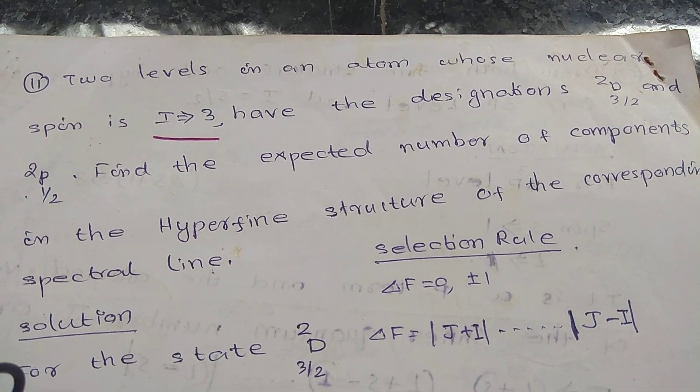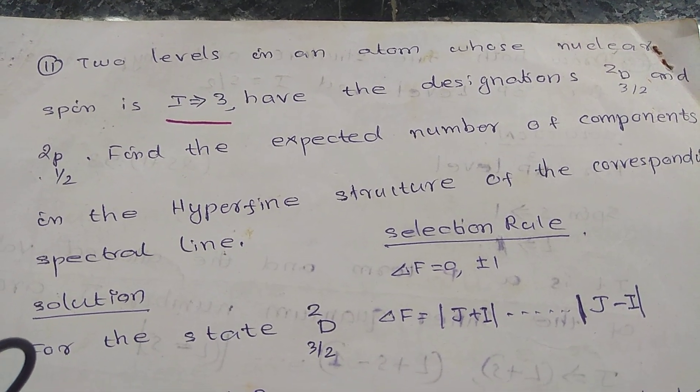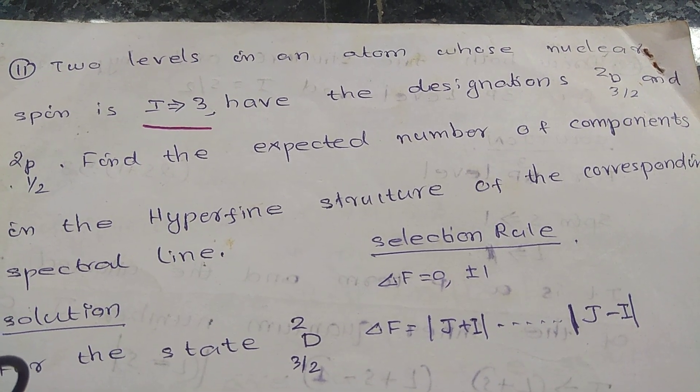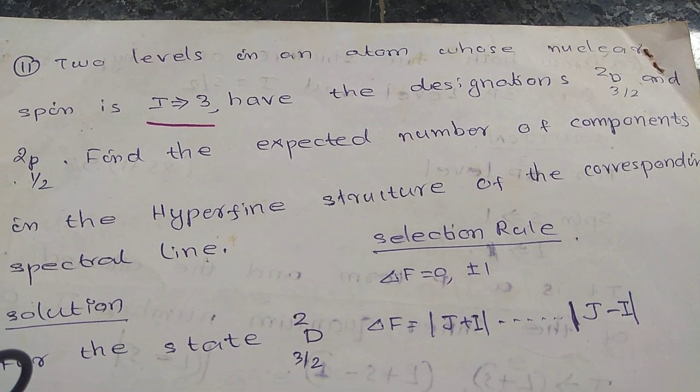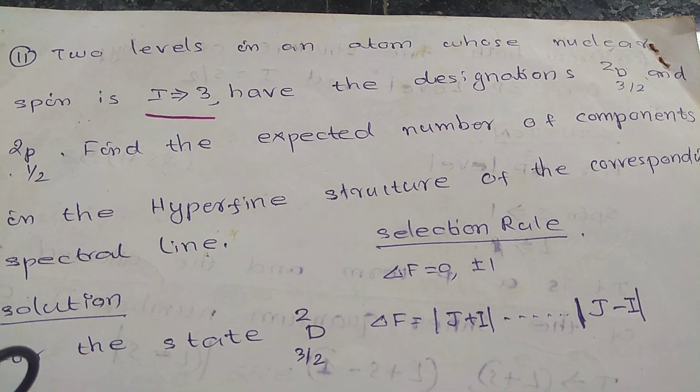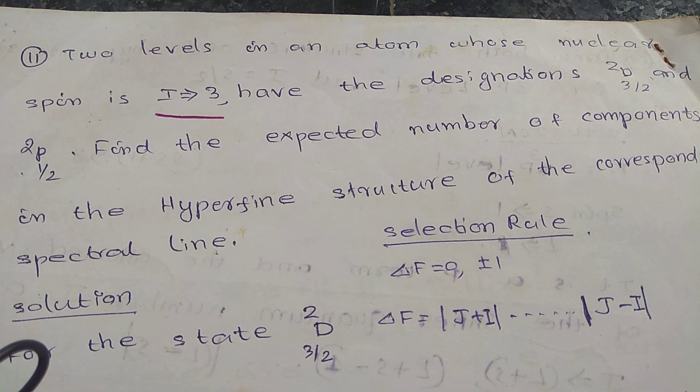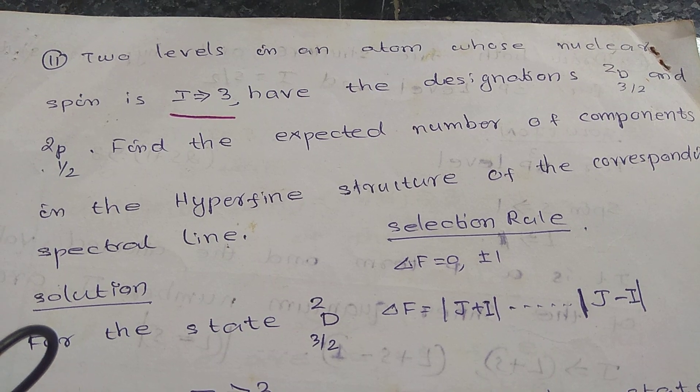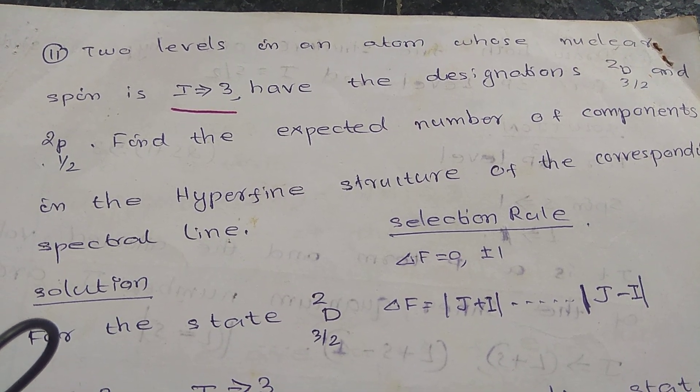Good morning, we are going to discuss hyperfine structure. Friends, consider two levels in an atom whose nuclear spin I equals 3, with the designations D₂³/₂ and P₂¹/₂. Find the expected number of components in the hyperfine structure of the corresponding spectral line.